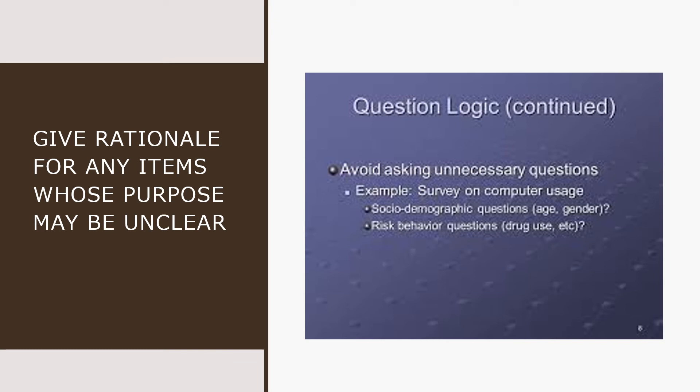Tip number five: give a rationale for any item whose purpose may be unclear. You are asking people to do you a favor by responding to your questionnaire, so give them a reason to want to do that favor. Each question should have a purpose, and in one way or another you should make that purpose clear. Do not ask unnecessary questions that will waste the time of your respondents and annoy them.